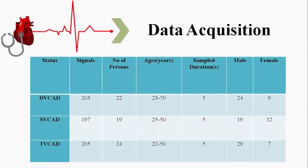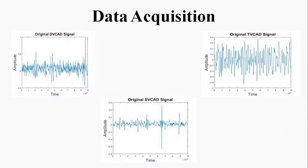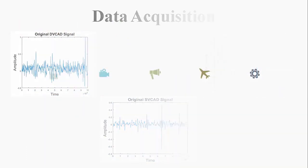The dataset has three classes. We have 203 DVCAD samples, 197 SVCAD samples, and 205 TVCAD samples in total. Here we can see the original signals for DVCAD, SVCAD, and TVCAD.